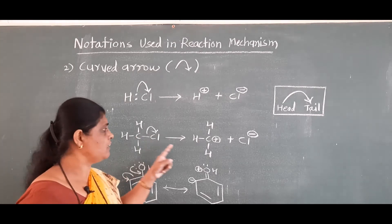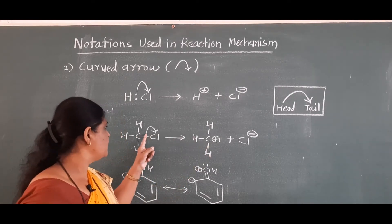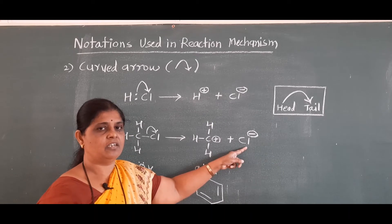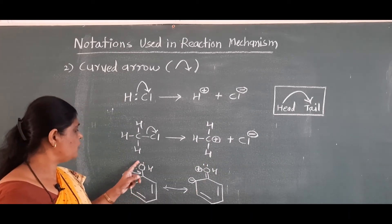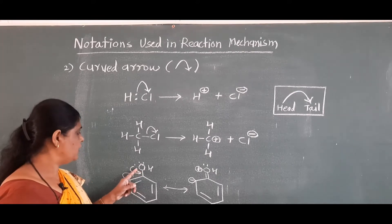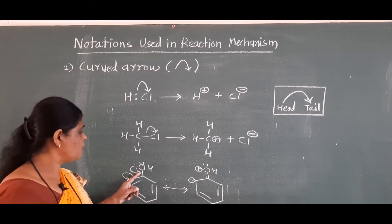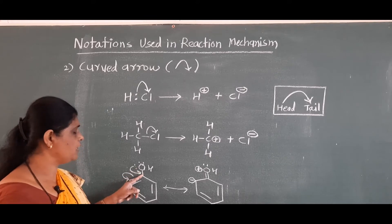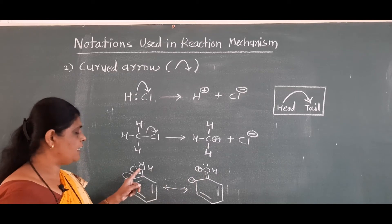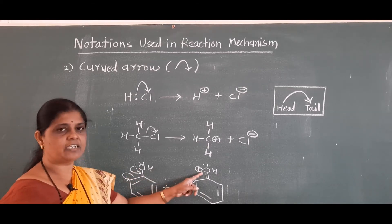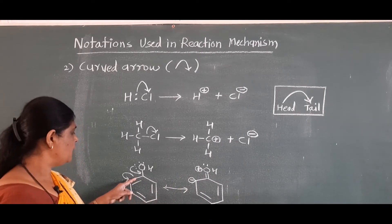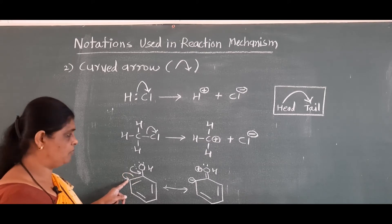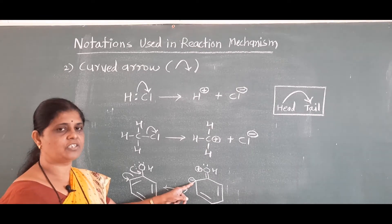As carbon becomes electron deficient, it carries a positive charge, and the electron pair goes towards chlorine, so chlorine carries a negative charge. In the case of phenol, there are two lone pairs of electrons on the oxygen atom, and that lone pair migrates towards the benzene ring. As the curved arrow migrates, the bond between oxygen and carbon becomes a double bond. As oxygen becomes electron deficient, it carries a positive charge, and the electron density migrates to a carbon atom, which then carries a negative charge.